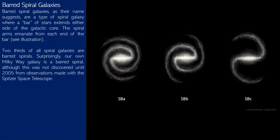Another of Hubble's classifications is barred spiral galaxies. Barred spirals, as their name suggests, are a type of spiral galaxy where a bar of stars extends either side of the galactic core. The spiral arms emanate from each end of the bar, as you can see in this illustration. Two thirds of all spiral galaxies are barred spirals.